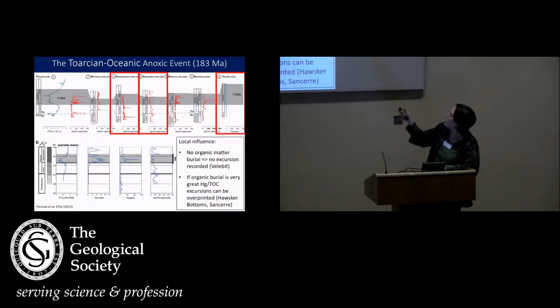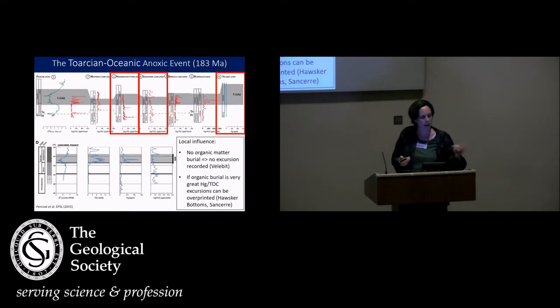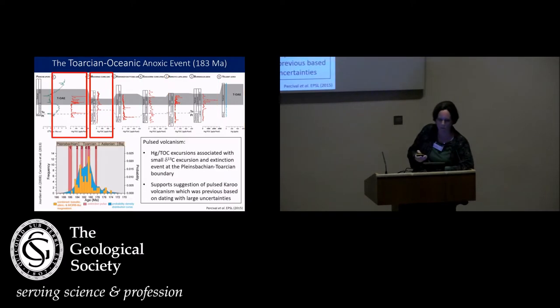So we cannot be sure that that is volcanic mercury. It could just be mercury being taken down from the background environment into the sediments themselves. And also in Croatia here at Velbit, we didn't actually have any organic carbon. And this is something that Lawrence again alluded to earlier. So we didn't have a signal there, but we're not sure if that's because there was no mercury in the environment or there was just nothing to take it down and hold it in the sediments. So the sedimentary chemistry is really important here.